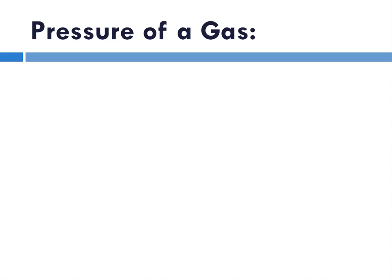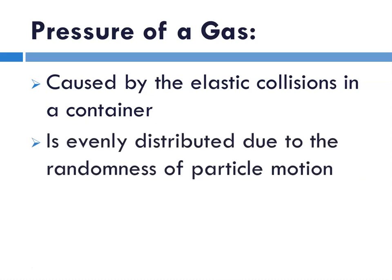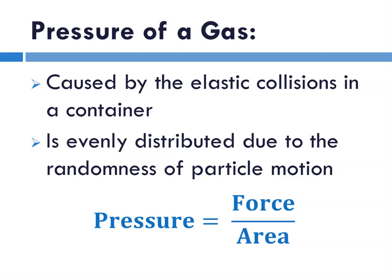We haven't really spent a lot of time talking about the pressure of a gas. It's caused by the collisions in a container. It's evenly distributed due to the randomness of gas particle motion. Pressure is actually defined as the force per unit area. If you think about pressure like measuring the pressure of your air inside of a tire, it's typically psi, which is pounds per square inch. Pounds are a measure of force, and square inches are area.